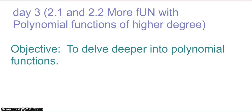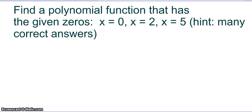Today we're going to continue on with sections 2.1 and 2.2, and we're going to continue to look at polynomials. First, I want you to try and find a polynomial function that has the given zeros: x equals 0, x equals 2, and x equals 5.